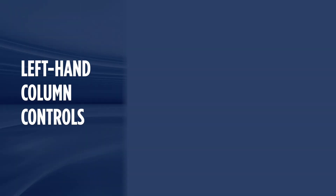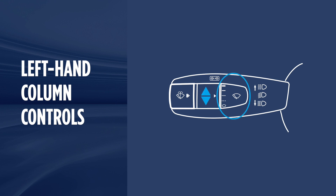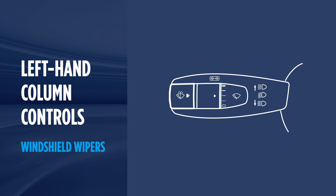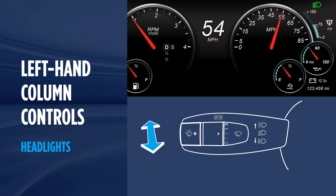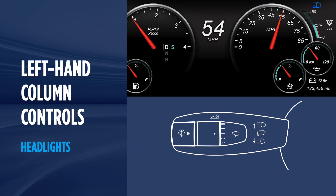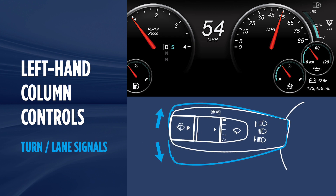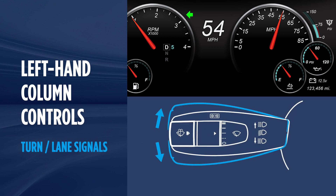Last but not least, the left-hand column control commands all of the standard operations for safe driving, much like your favorite car. All of the windshield wiper operations are located here — press the button on the end to activate the washer fluid, and use the switch in the middle to select your wiper speed. Push the control away from you to toggle between low and high beam headlights, or pull towards you to activate the high beam flash. Push up or pull down on the left column control to signal a right or left turn.